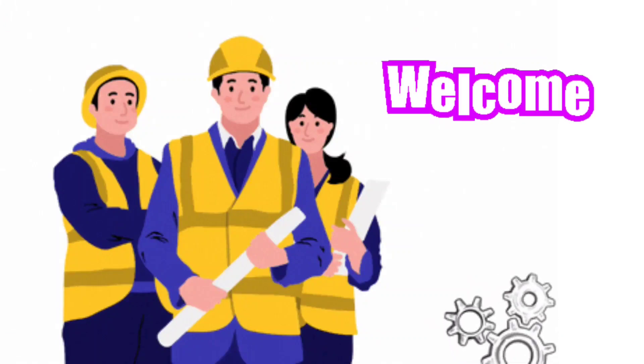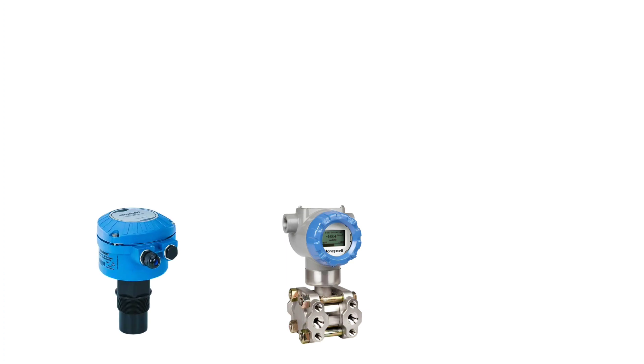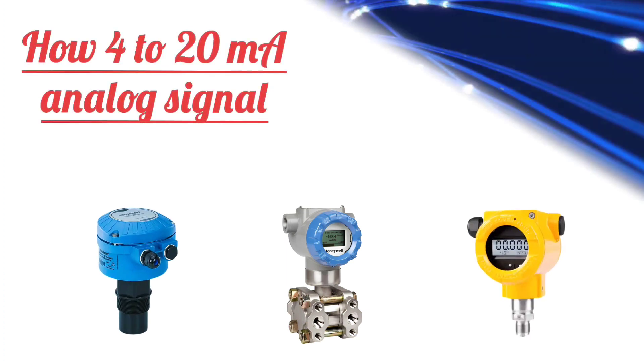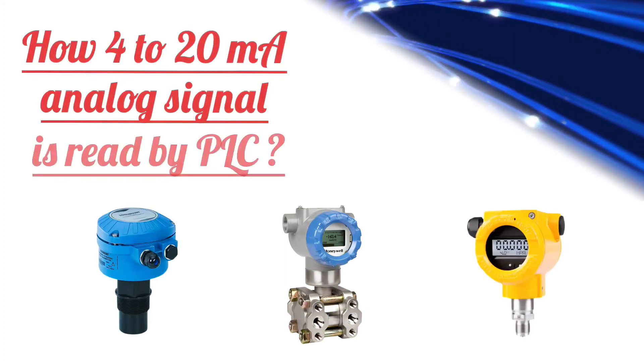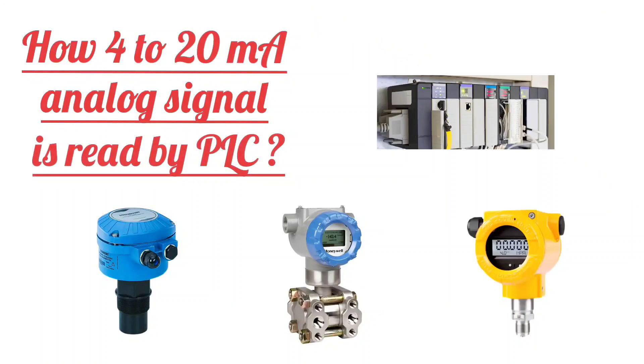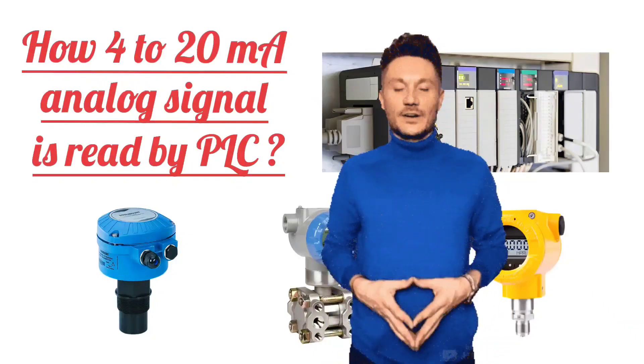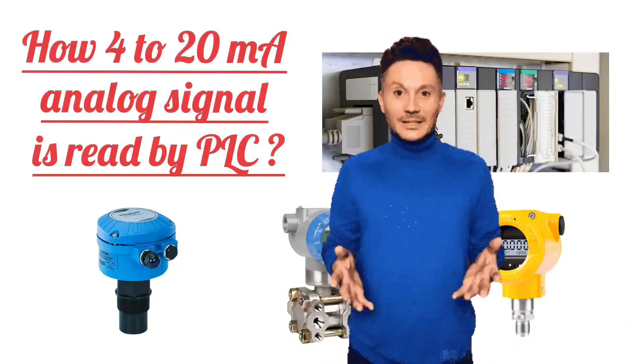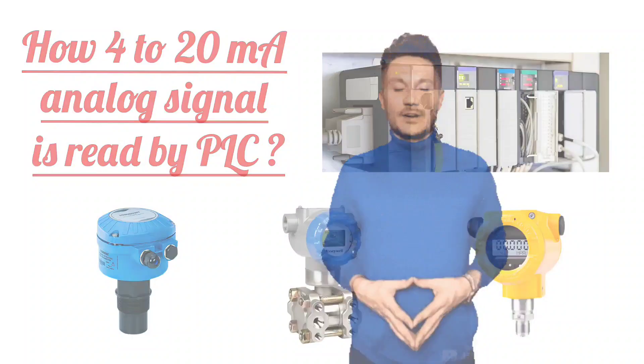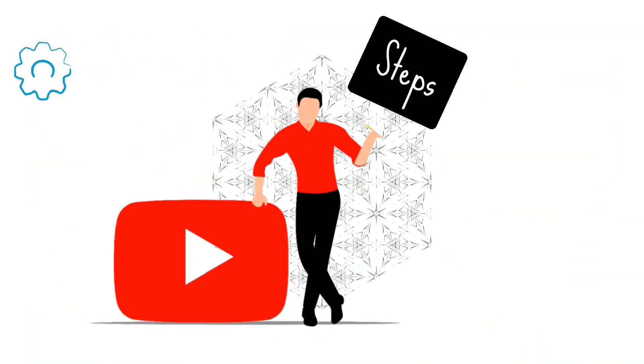Hello friends. In today's video, we will discuss how the 4 to 20 milliampere analog signal of pressure transmitter or any transmitter is read with PLC or programmable logic controller. We have explained this in few steps through which you can easily understand. Don't miss even a single step.